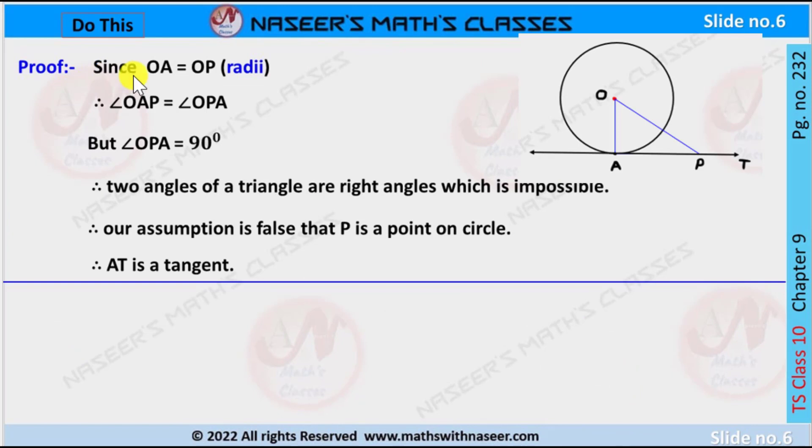Proof: Since OA is equal to OP (radii), angle OAP is equal to angle OPA. But angle OPA is 90 degrees. Two angles of a triangle are right angles, which is impossible. So our assumption is false that P is a point on the circle. Therefore, AT is the tangent to the circle with center O, which is perpendicular to the radius OA.